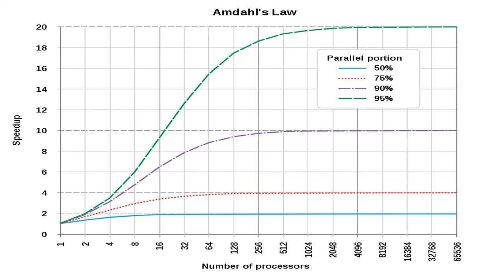Practically, the number of parallel operations increases according to the size of the problem. However, since the load is assumed to be fixed in Amdahl's law, the execution time keeps increasing as the number of processes increases. Amdahl's law is suitable for applications where response time is critical. On the other hand, many applications require that the accuracy of the output be high. The computing power has increased substantially due to increases in the number of processors, making it possible to increase the problem size and workload.